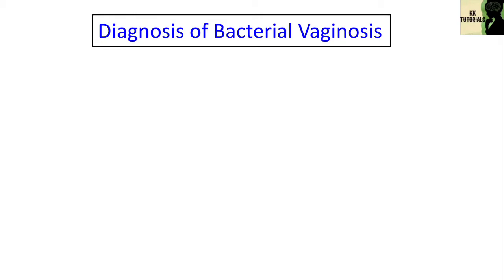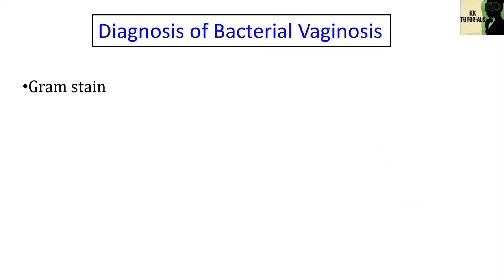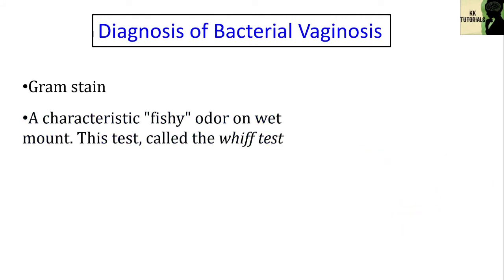To make a diagnosis of bacterial vaginosis, a swab from inside the vagina should be obtained. These swabs can be tested for gram stain, which shows the depletion of lactobacilli and overgrowth of Gardnerella vaginalis bacteria. Bacterial vaginosis is usually confirmed by a gram stain of vaginal secretions. A characteristic fishy odour on wet mount — called the whiff test — is performed by adding a small amount of potassium hydroxide to a microscopic slide containing the vaginal discharge. A characteristic fishy odour is considered a positive whiff test and is suggestive of bacterial vaginosis.